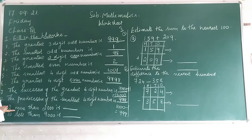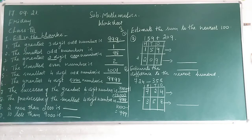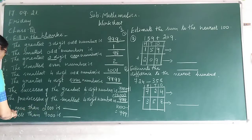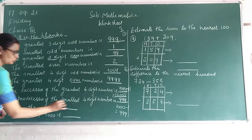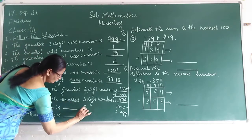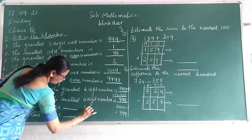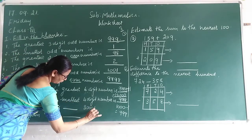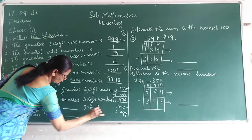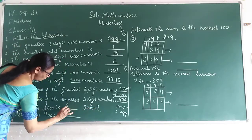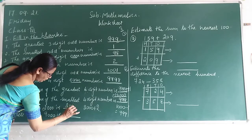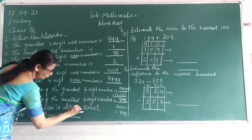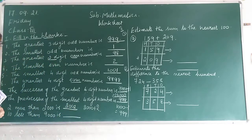2 more than 2,000 is dash. 2 more means 2,000 plus 2. So the answer is 2,002.